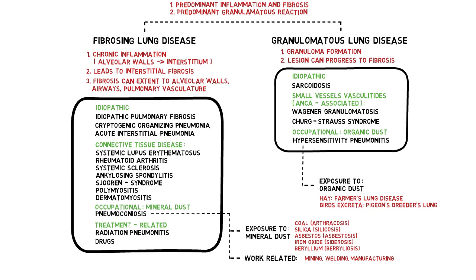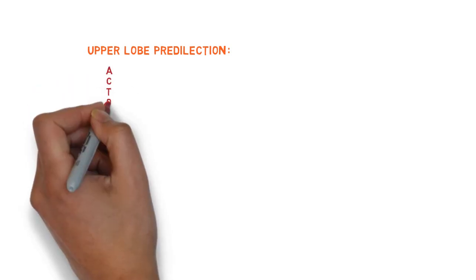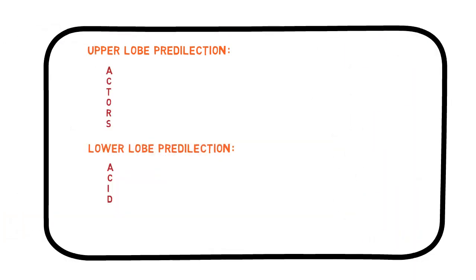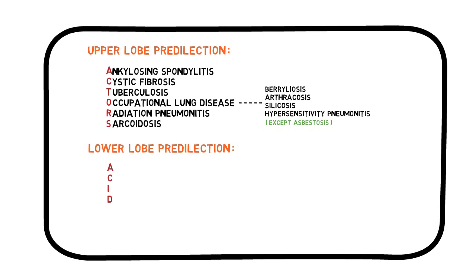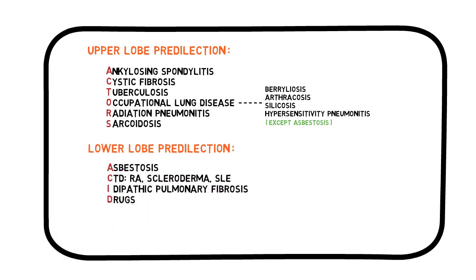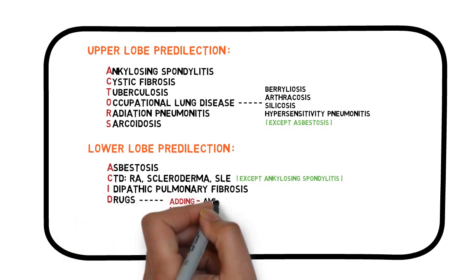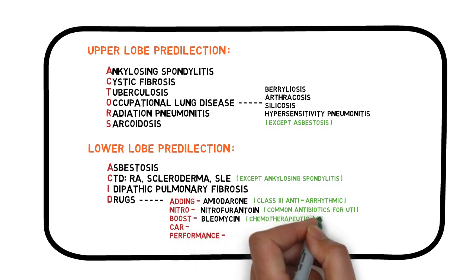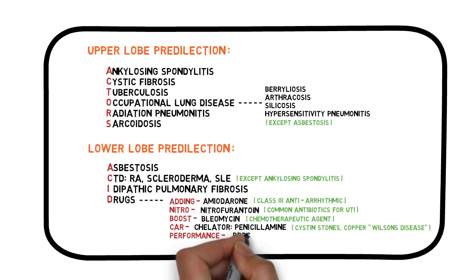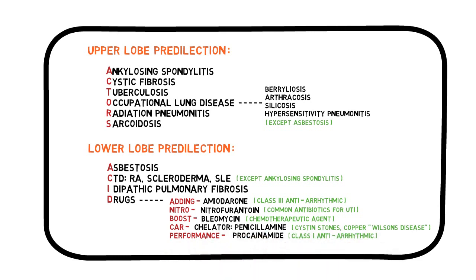A helpful classification is based on anatomical lobe predilection. Upper lobe fibrosis is associated with ankylosing spondylitis, cystic fibrosis, tuberculosis, occupational lung disease (except asbestosis), radiation pneumonitis, and sarcoidosis. Lower lobe fibrosis is associated with asbestosis, connective tissue disease (except ankylosing spondylitis), idiopathic pulmonary fibrosis, and drugs. Common causative drugs include amiodarone (anti-arrhythmic), nitrofurantoin (antibiotic for UTI), bleomycin (chemotherapy), penicillamine (copper/cysteine chelator), and procainamide (anti-arrhythmic).